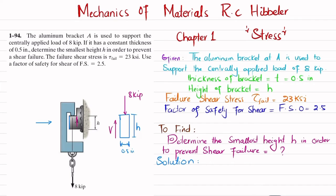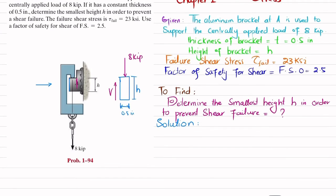We will apply equation of equilibrium that sum of all forces along y direction must be equal to 0, and upward force is taken as positive. So minus 8 kips plus shear force V is equal to 0, so from here you will get this shear force will be equal to 8 kips.